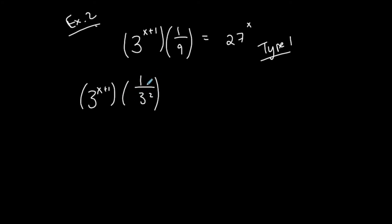This 3 is already of base 3, but this 1 over 9 I'm going to write it as 3 squared, and then I still have stuff to do with that. 27 is 3 to the third, and that's being raised to the x. So everything has the same base, but now I have properties of exponents that I need to do to simplify and bring everything together.